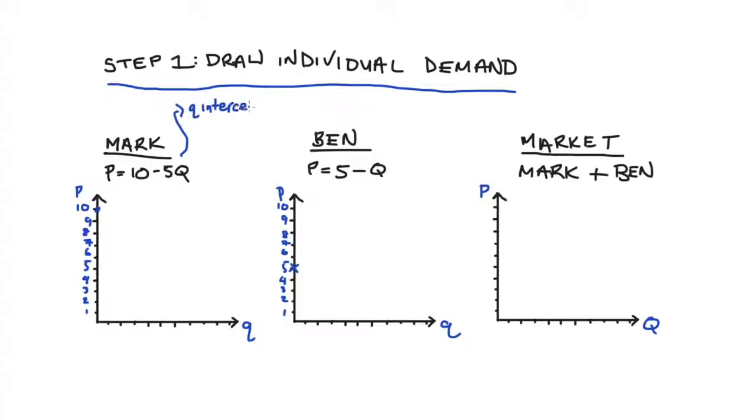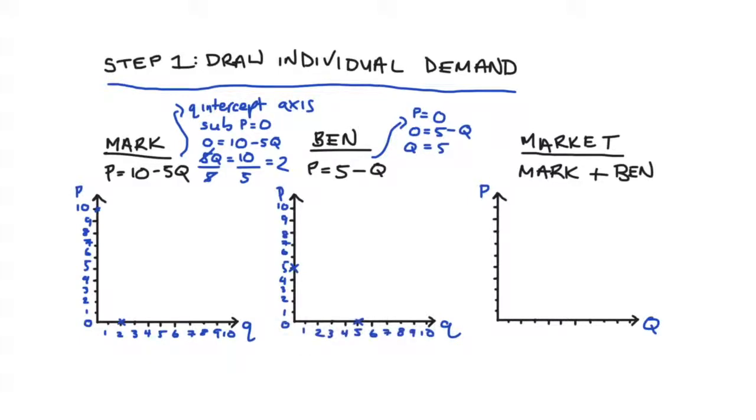To find our quantity axis intercepts, we substitute p equals zero into both equations. So for Mark, 0 equals 10 minus 5q. Adding 5q to both sides we find 5q equals 10. Dividing both sides by 5 we get q equals 2. For Ben, if p equals 0 then 0 equals 5 minus q. Adding q to both sides we get q equals 5. If we draw a line between these intercepts for both individuals we get our downward sloping demand curves for each of these individuals. And that's step one finished.